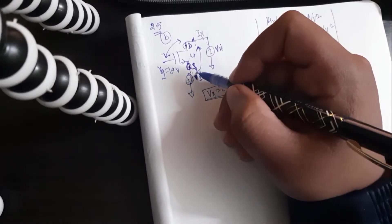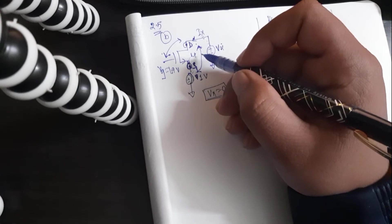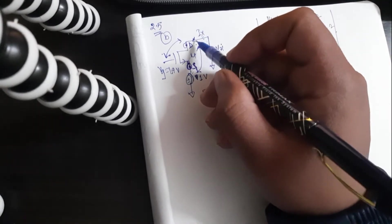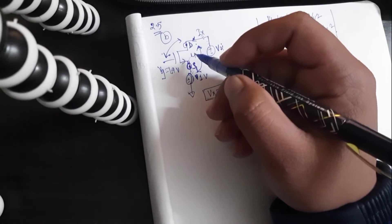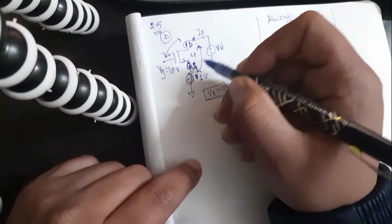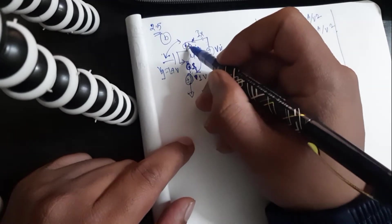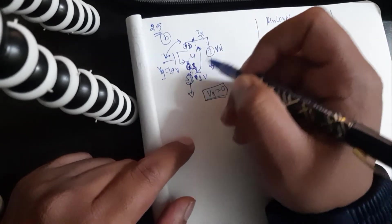Once Vx crosses 1 volt, then the polarity will shift again. And in that case, this will become a source and this will become the drain.